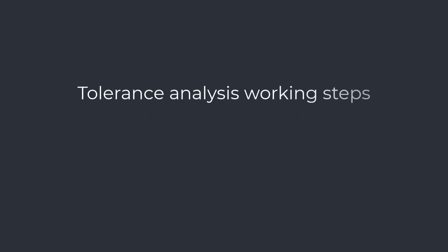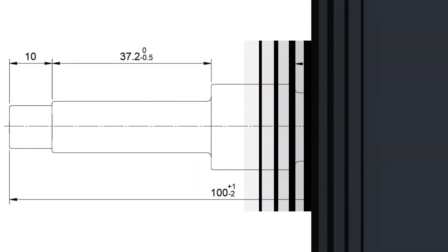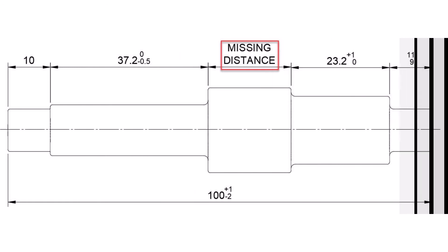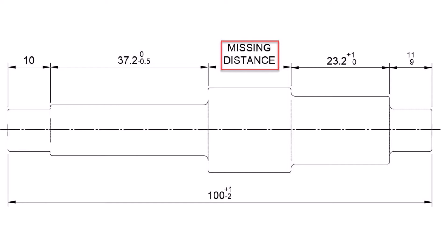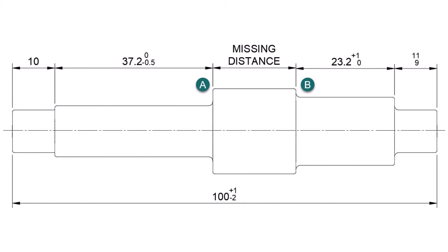Tolerance Analysis Working Steps — Defining the Distance to Calculate. Let us investigate the example of a simple shaft drawing, simplified for the sake of the lesson. We have five different dimensions defined with different tolerances. We can easily calculate the expected manufacturing dimensions for the five dimensioned features. However, we are interested in calculating the manufacturable nominal value and the tolerance of non-dimensioned features. Once we know what distance we want to calculate, we will mark one end with the letter A and the other end with the letter B.